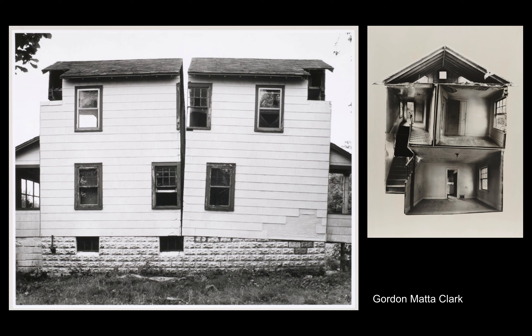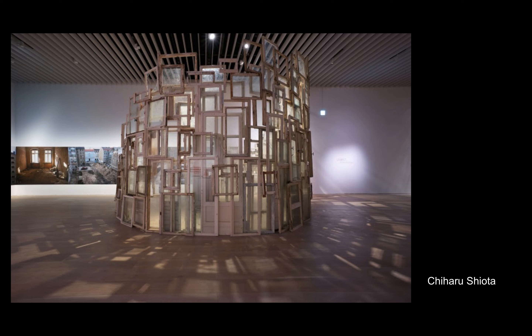Gordon Matta-Clark is really famous for a piece where he took an actual house and split it — you can see a couple different angles of that. You can think about interiors, exteriors — any one of those areas could be interesting for your architecture work. I mentioned that you could use different parts used in architecture, like doorknobs, or as in Shihari Shiota's piece, windows. If there's something really interesting to you like the molding on doorways, or different structures you see around the house, or a stained glass window, there's all kinds of possibilities.